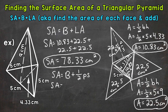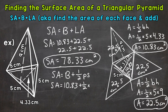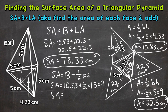Once we have that formula, we can plug in. Surface area equals the area of the base, which was 10.83 — we rounded that to the nearest hundredth — plus one-half times the perimeter of the base. Our base has sides of five, five, and five, so five plus five plus five gives us a perimeter of fifteen, times the slant height of nine. Now we're ready to solve. One-half times fifteen times nine gives us the lateral area of 67.5.